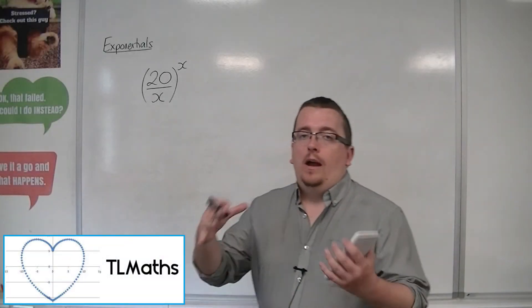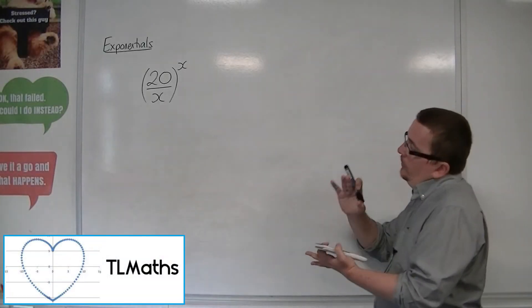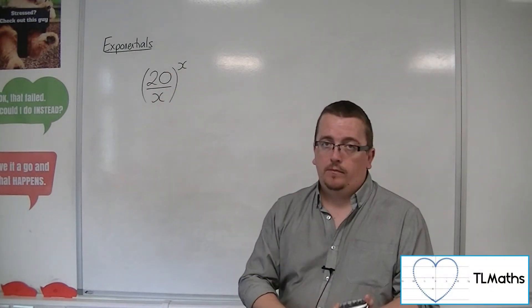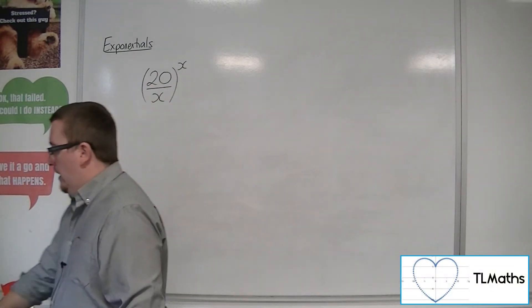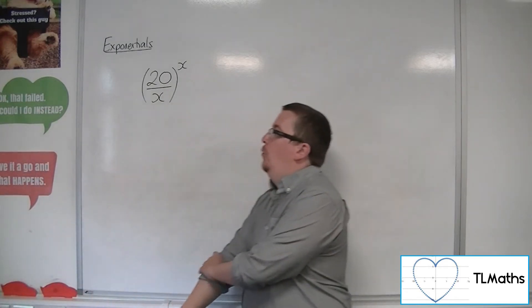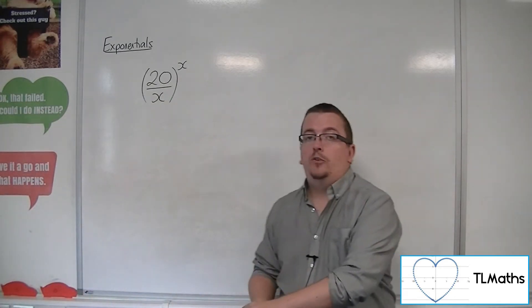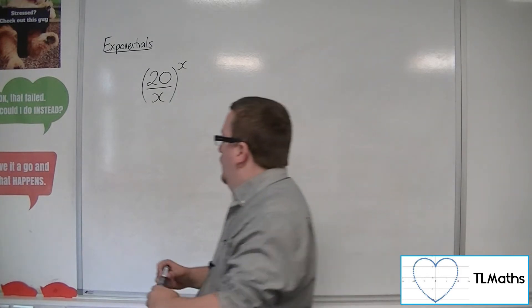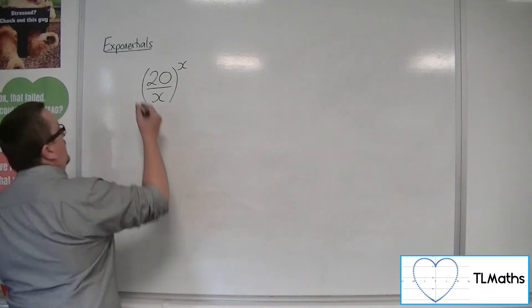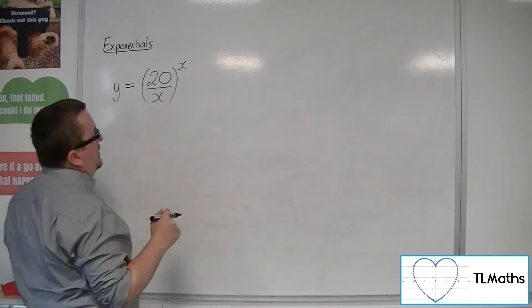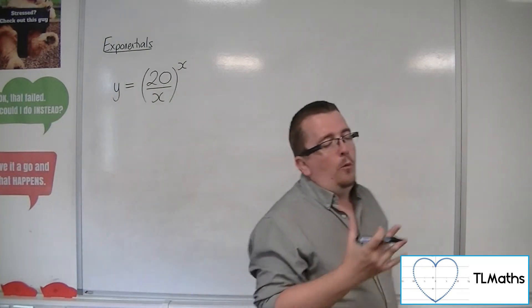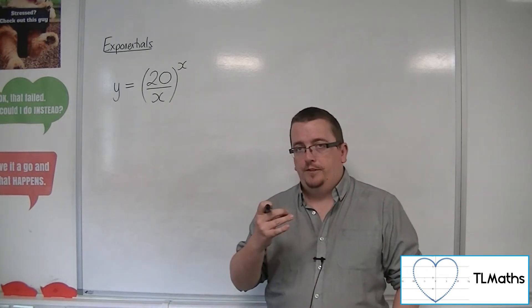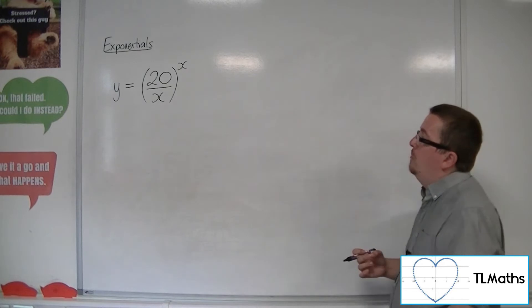So in the previous video, you were looking at trying to maximize 20 over x to the x. Now in this video, what we're going to do is work through the calculus that will allow us to solve this exactly. So what we want to do is maximize y equals 20 over x to the x. And so what we want to do is differentiate it and find the maximum point. So we want to find the stationary point for it.